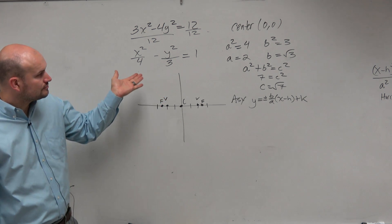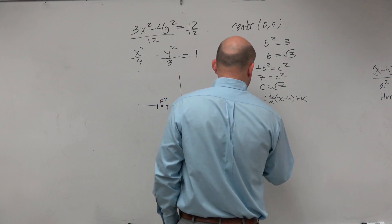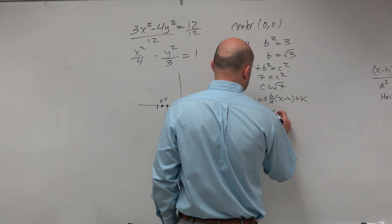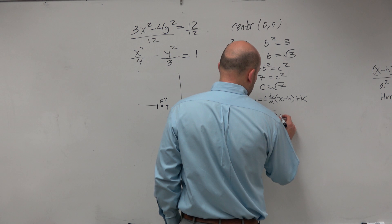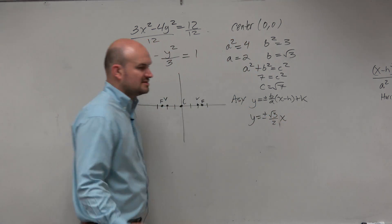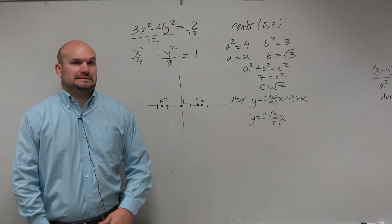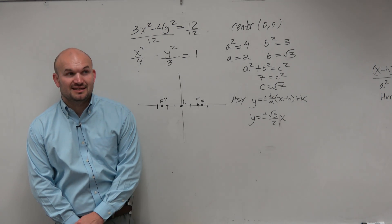Yeah, I already have b, which is square root of 3. So y equals plus or minus the square root of 3 over 2 times x. Right? Because h and k are both 0. Does anybody know how to graph that? That doesn't look that fun, does it?